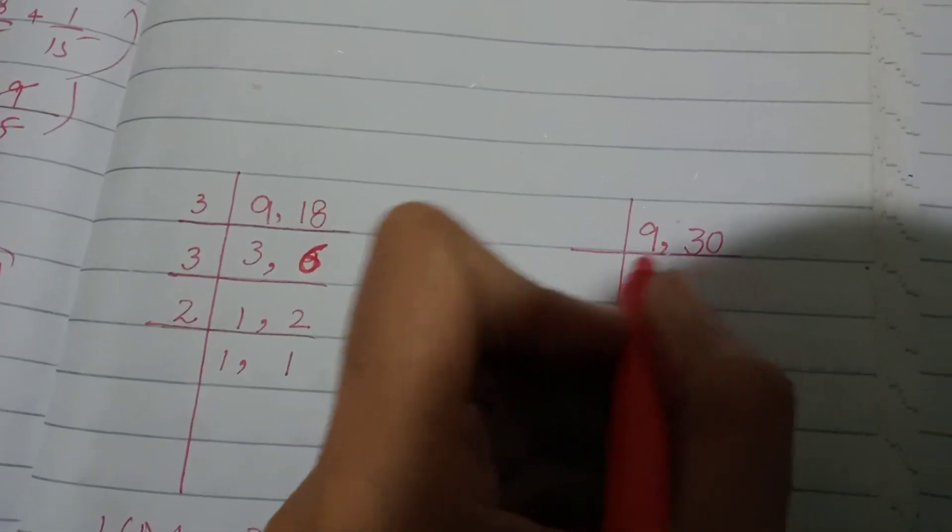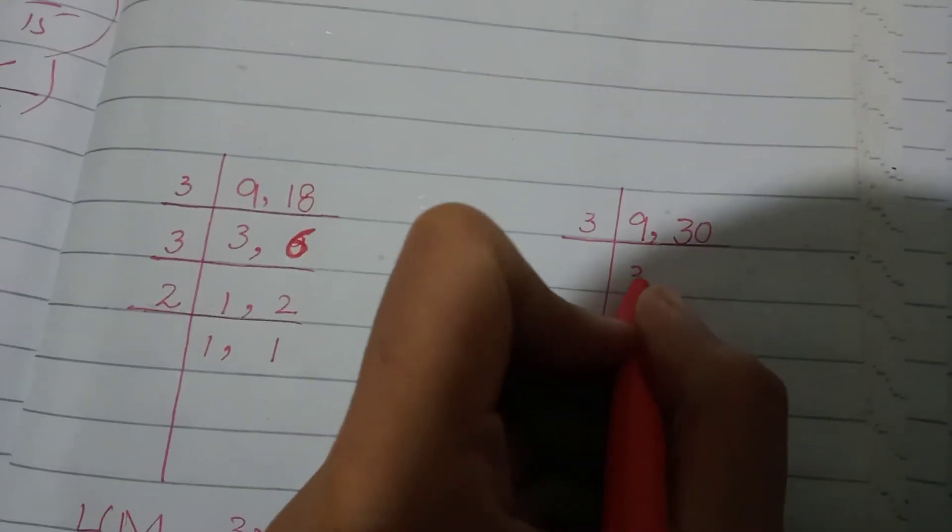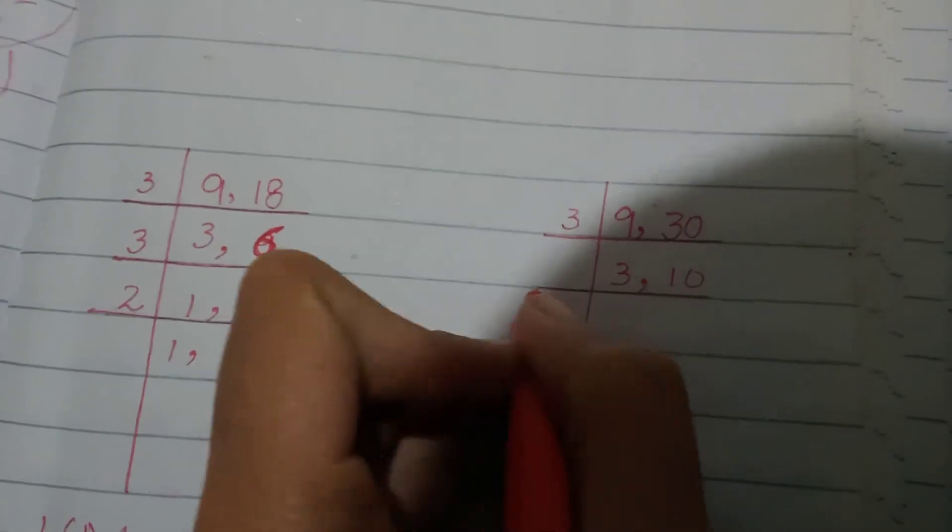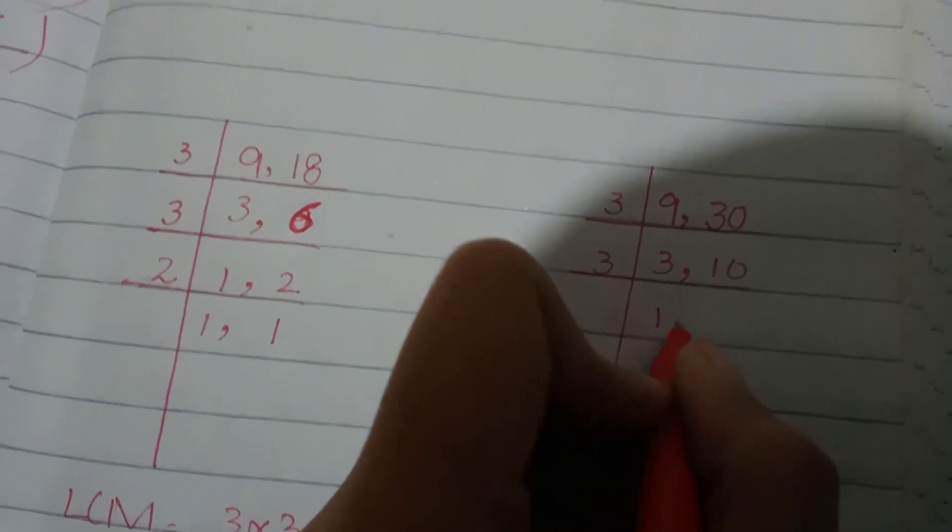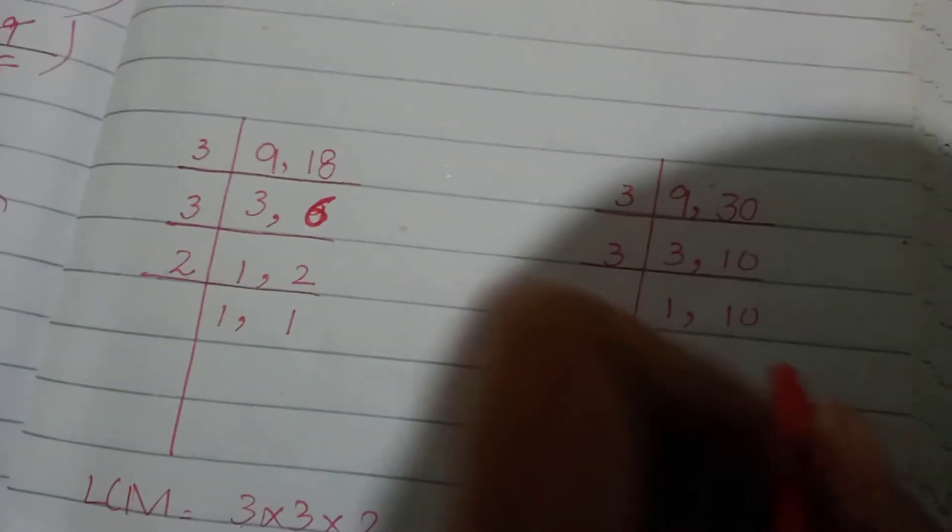Let's see how to find the LCM of 9 and 30. 3 divides into 9, and 3 divides into 30 giving 10. 3 into 3 is 1. Now you are seeing that only 10 remains, so what do we do?